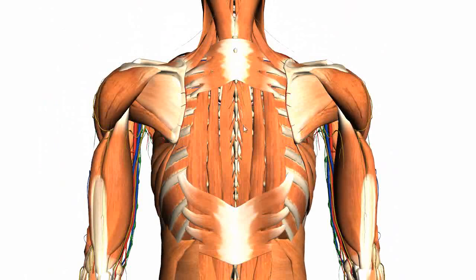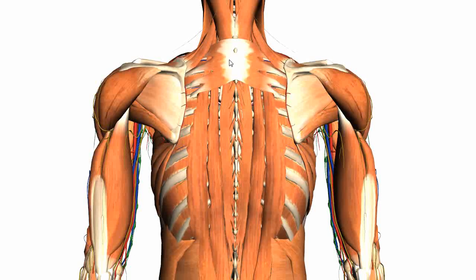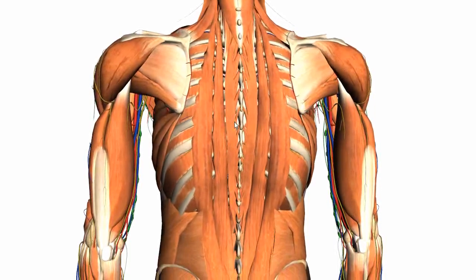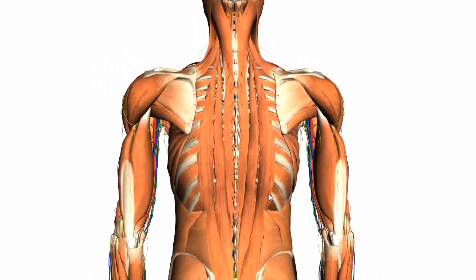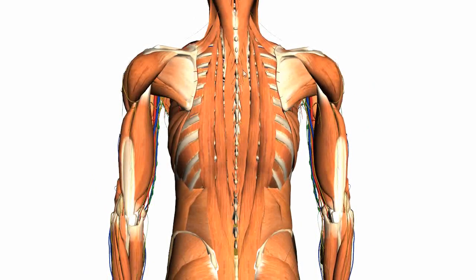Next we have the deep muscles of the back. We've gone from the extrinsic muscles down to the intermediate muscles, and now we're moving on to the deep muscles. Getting rid of the intermediate muscles, underneath we have the intrinsic muscles. As mentioned, these muscles are innervated by the posterior rami of spinal nerves, they extend from the pelvis right up to the skull, they develop in the back, and are involved with moving the vertebral column and moving the head and neck.